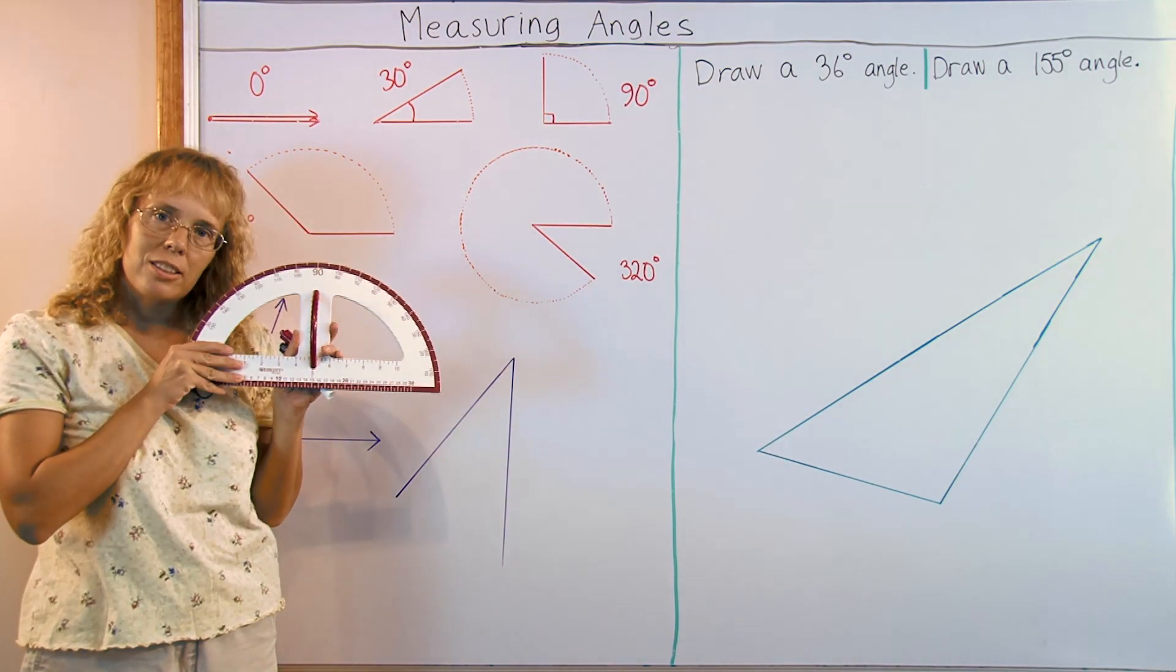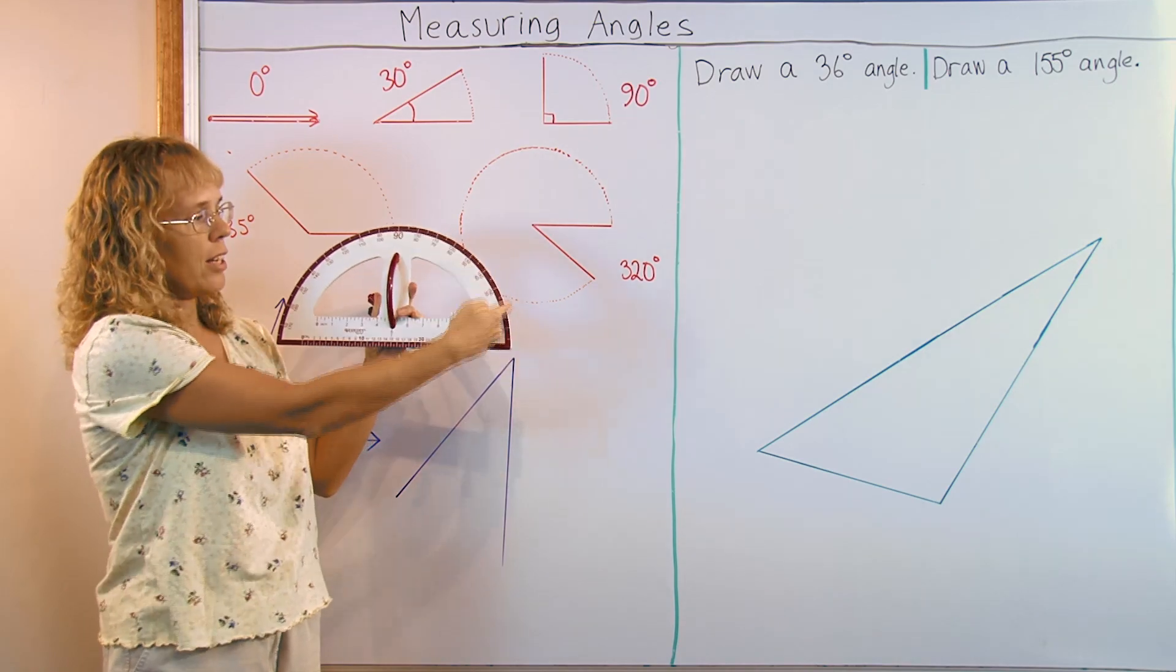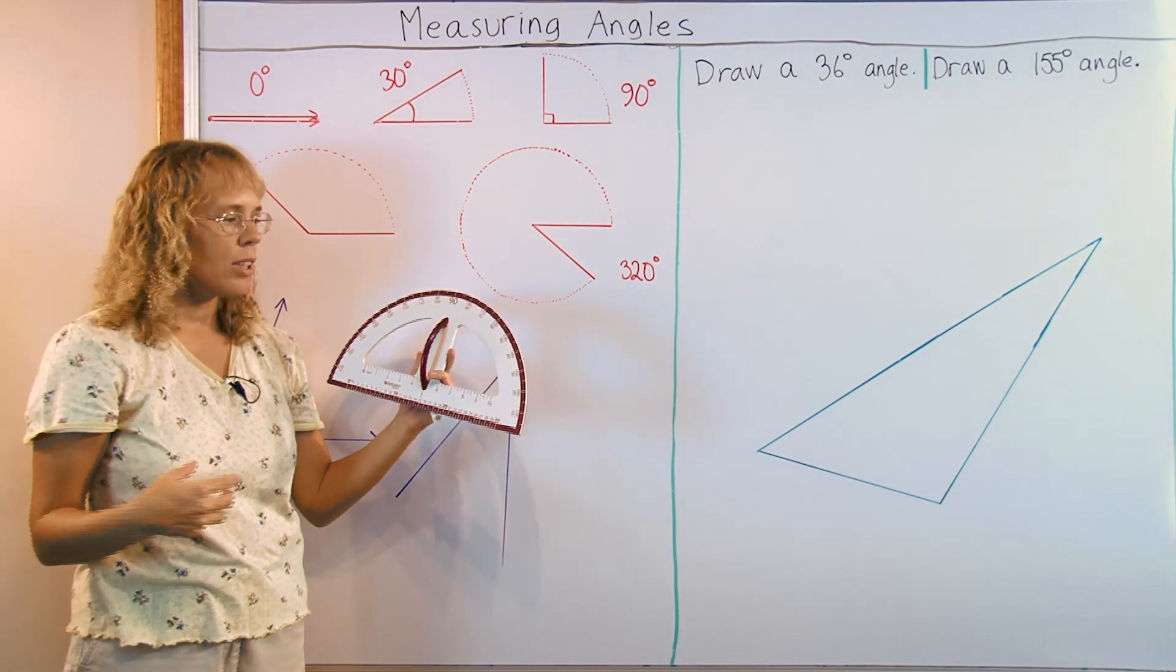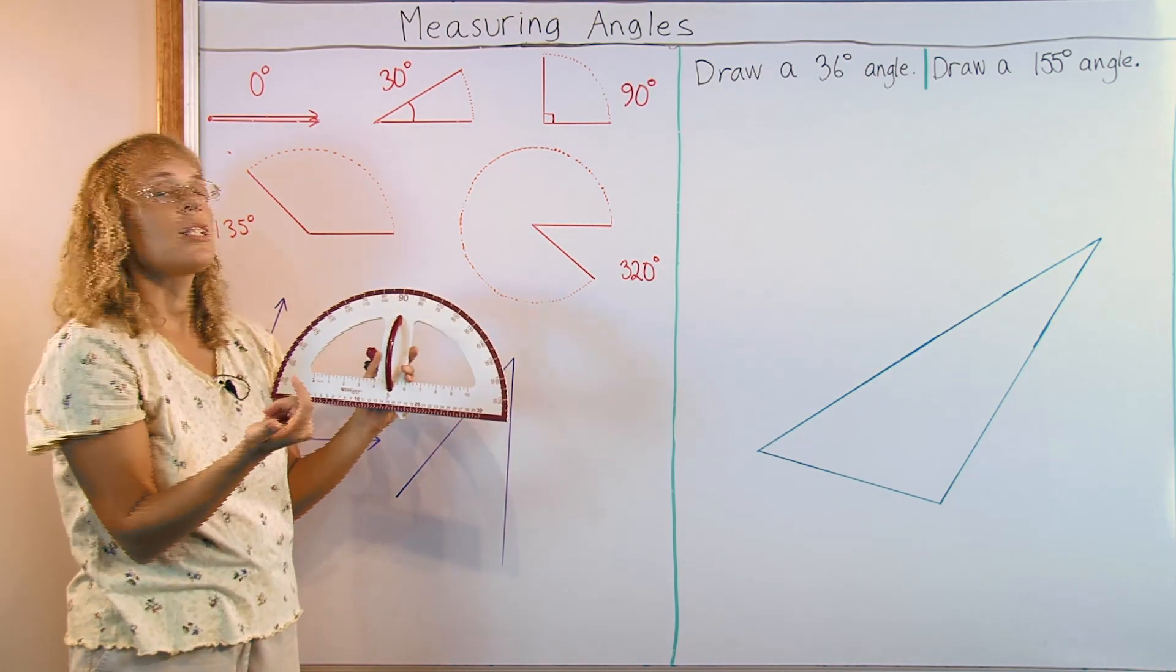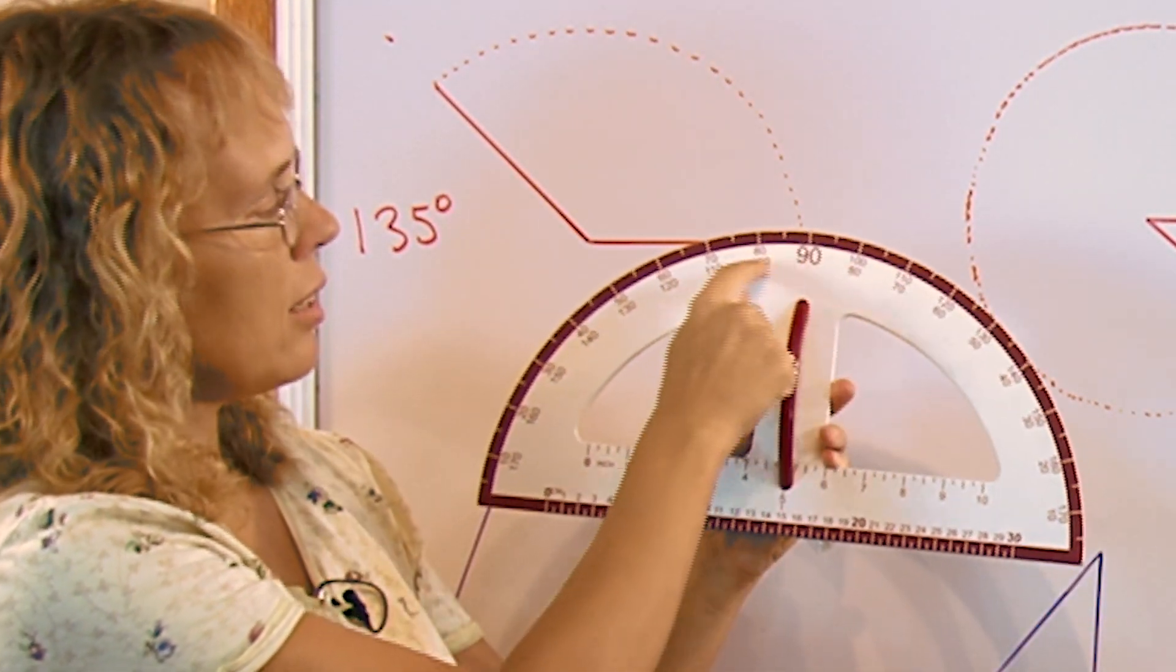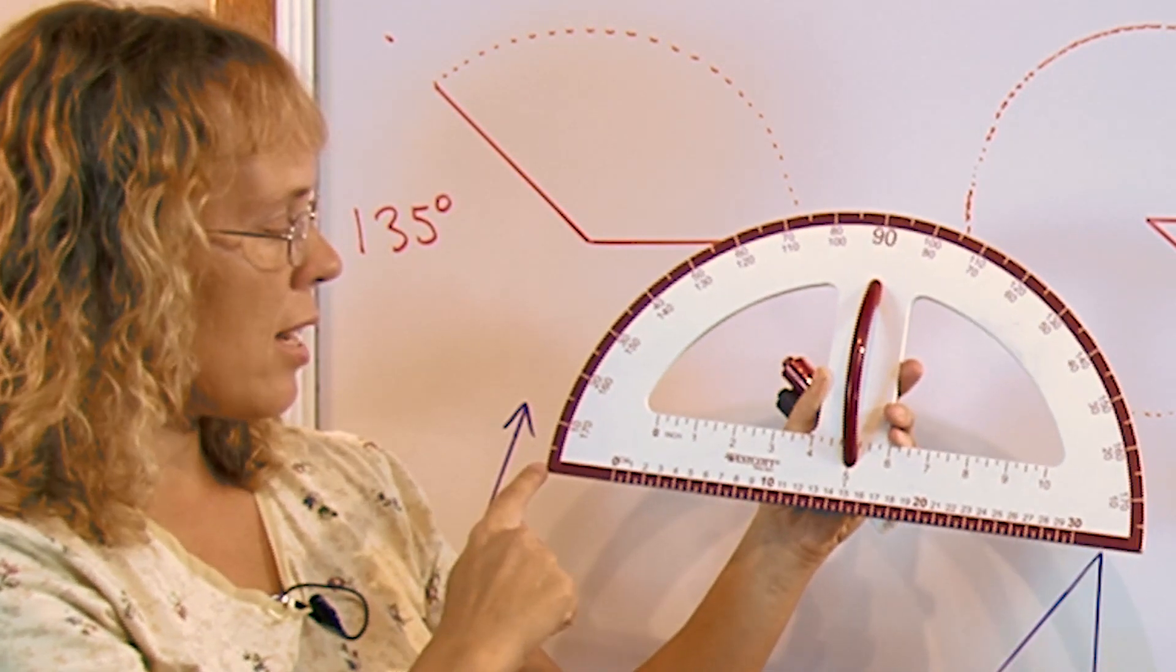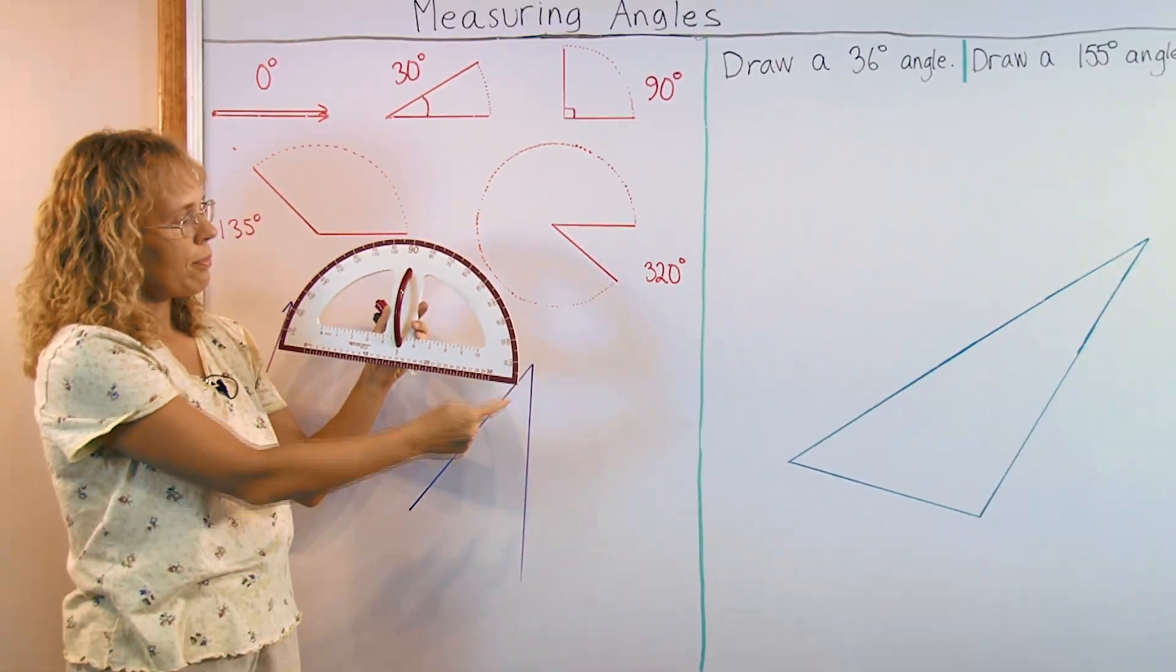We use a protractor to measure angles, because it has usually half a circle here marked and it has the numbers for the degrees. Mine has two sets of numbers and that's usually the case. One set of numbers starts here at zero, goes 10, 20, 30, 40, 50, down over here to 180 and the other set of numbers starts here at zero and goes all the way here to 180.